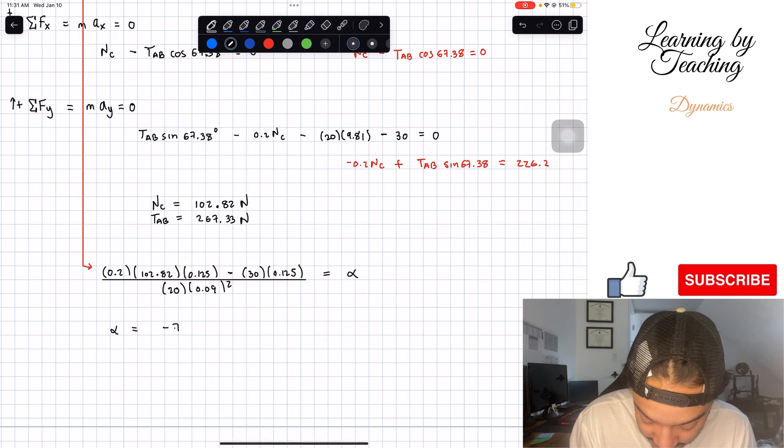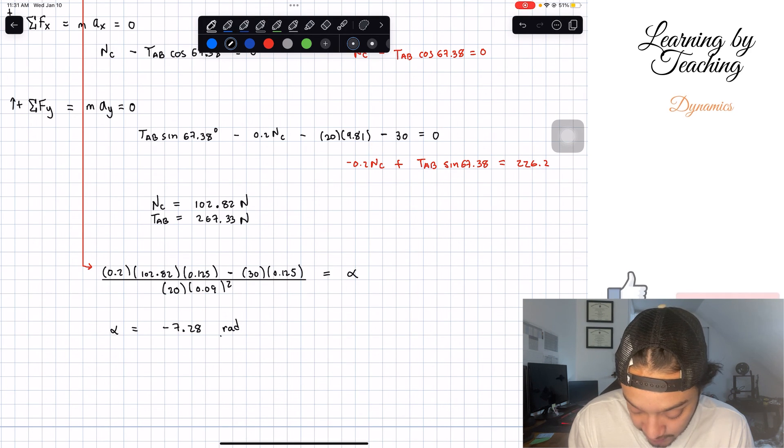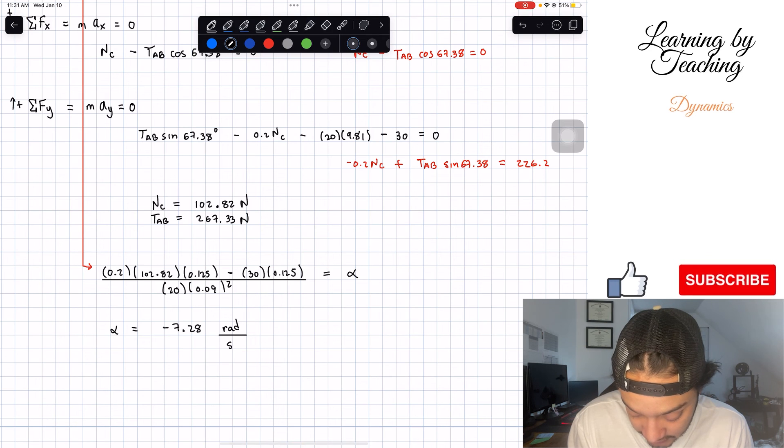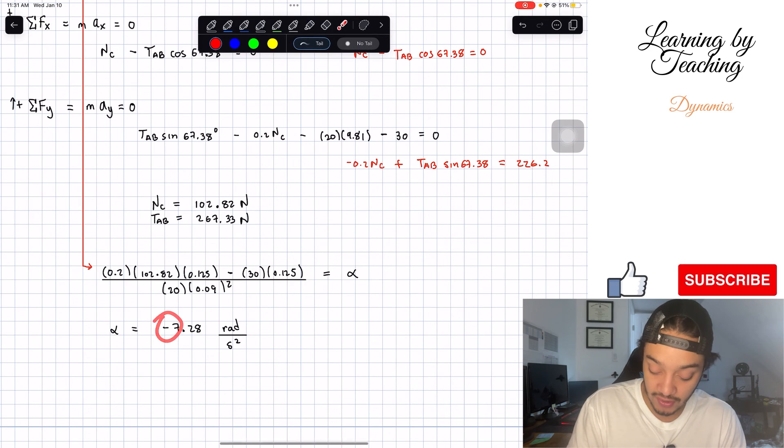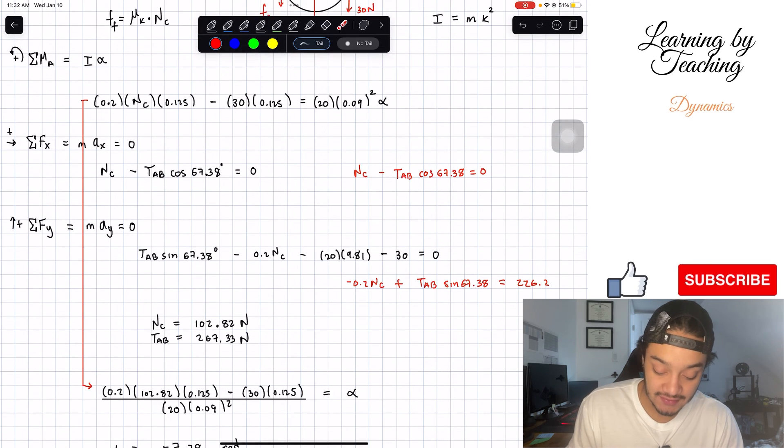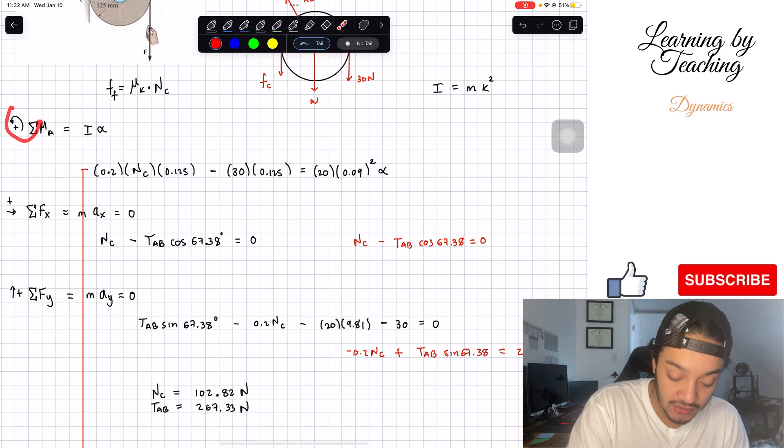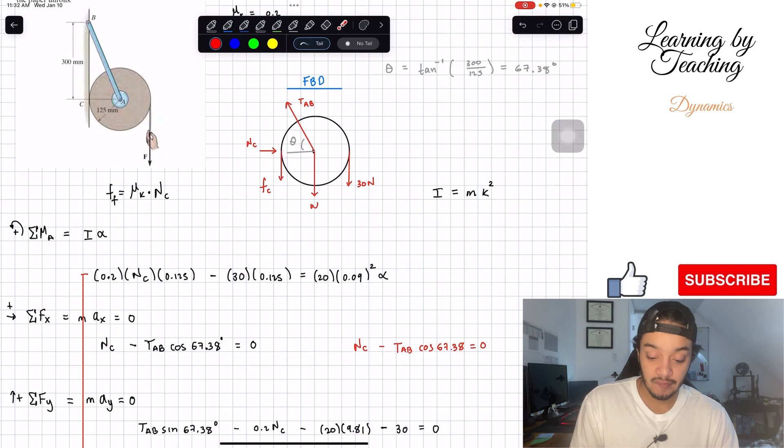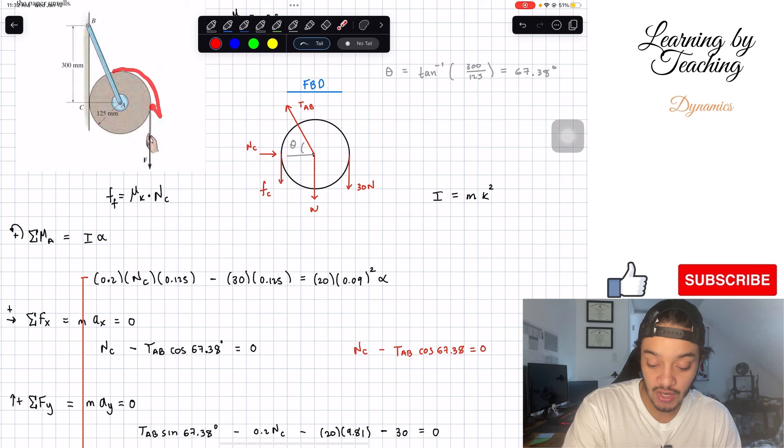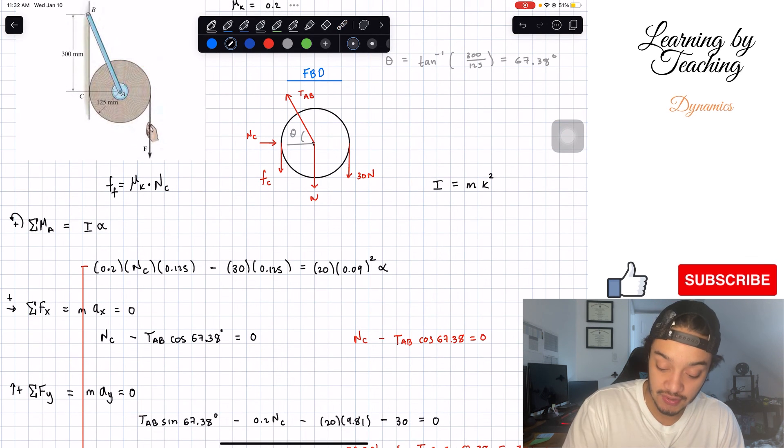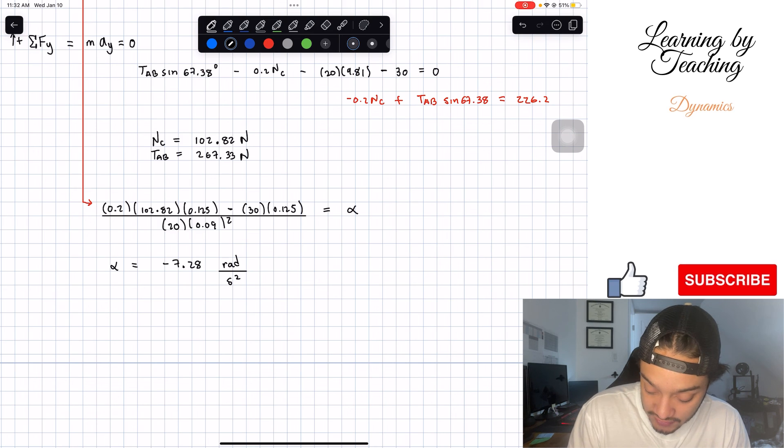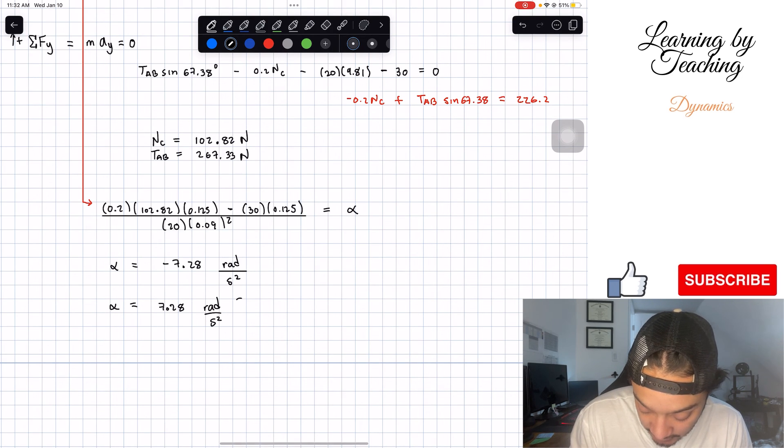We can see that we got a negative angular acceleration. Why is that? Well, that is because we are initially assuming that going counterclockwise is positive. But as we can see, if we use a little bit of common sense, we're actually going clockwise. So it makes sense that we're going in that direction, in the negative direction. Or we can just say that our angular acceleration is equal to 7.28 radians per second squared in the clockwise direction. So now we know which direction. And just like that, we figured out our answer for this problem.